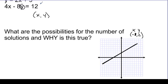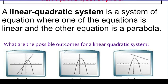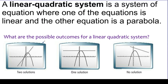Now what we're going to do is say: what happens if one of these is not a line anymore, but it's a parabola? A linear-quadratic system is a system where one equation is linear and the other is a parabola — one's a line, one's a parabola. Here are our possibilities: a line and a parabola might cross at two spots, or the line might just graze the parabola at one spot, or maybe they miss each other completely. So when solving a linear-quadratic system, maybe there's two solutions, one solution, or no solutions.